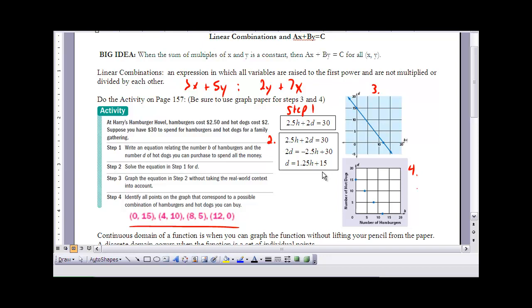Step 3 says go ahead and graph that without taking the real-world concepts into account. So what they want you to do is graph the line. Don't think about the fact that you're not going to buy half a hot dog or a part of a hamburger. To graph that line, I can use my slope-intercept form, and if I have the slope of 1.25H, remember that's the same as 5 fourths. You're going to have a y-intercept of 15, and you can go ahead and graph that.